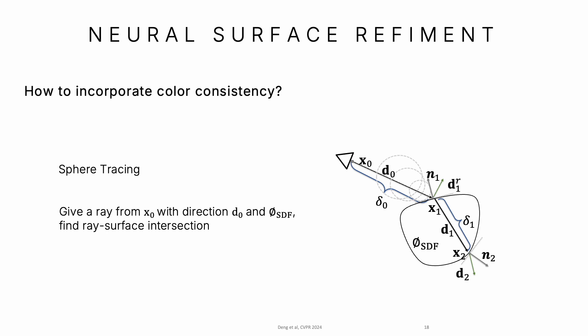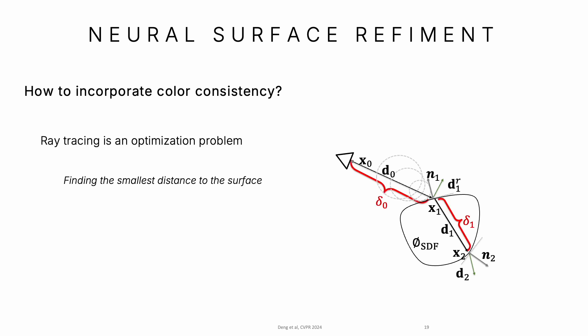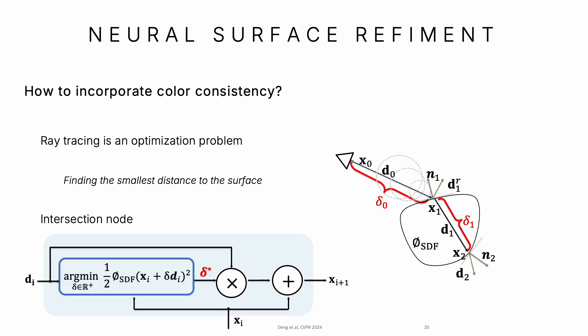We use sphere tracing to find ray-surface intersections. We can view sphere tracing as an optimization problem where the goal is to find the smallest distance to the surface, giving us an intersection node.